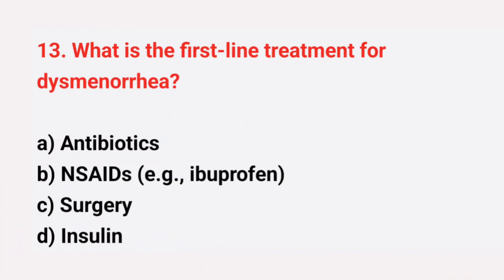Question number 13: What is the first-line treatment for dysmenorrhea? The right answer is option B, NSAIDs.